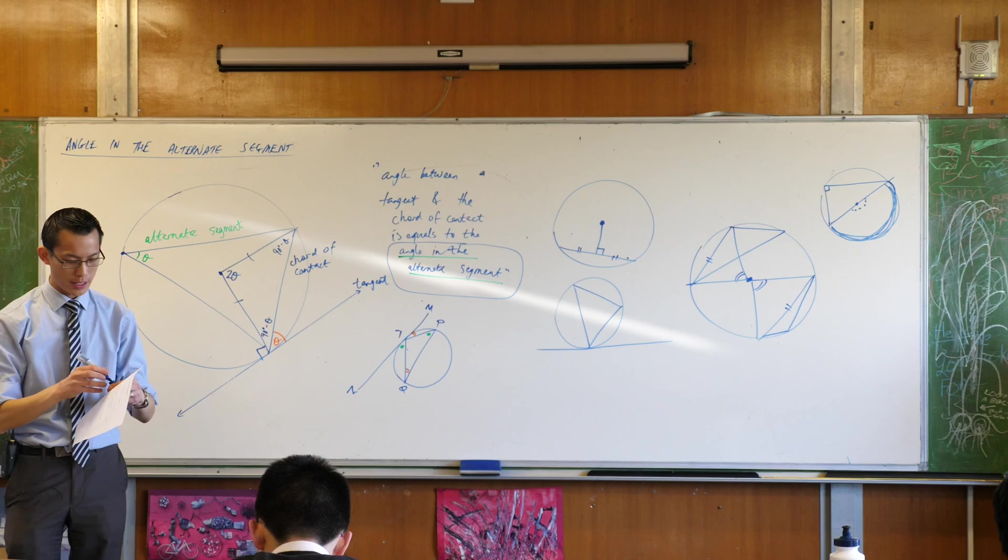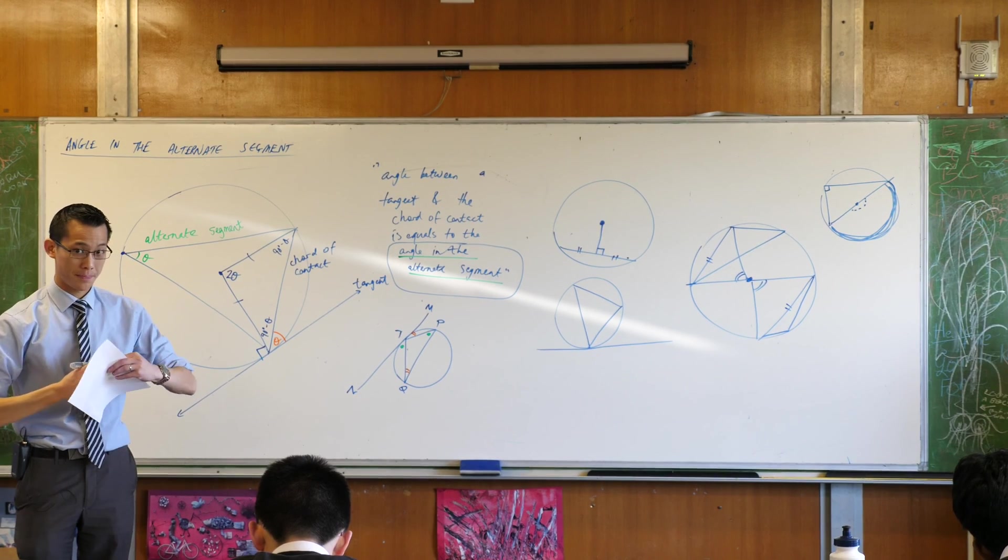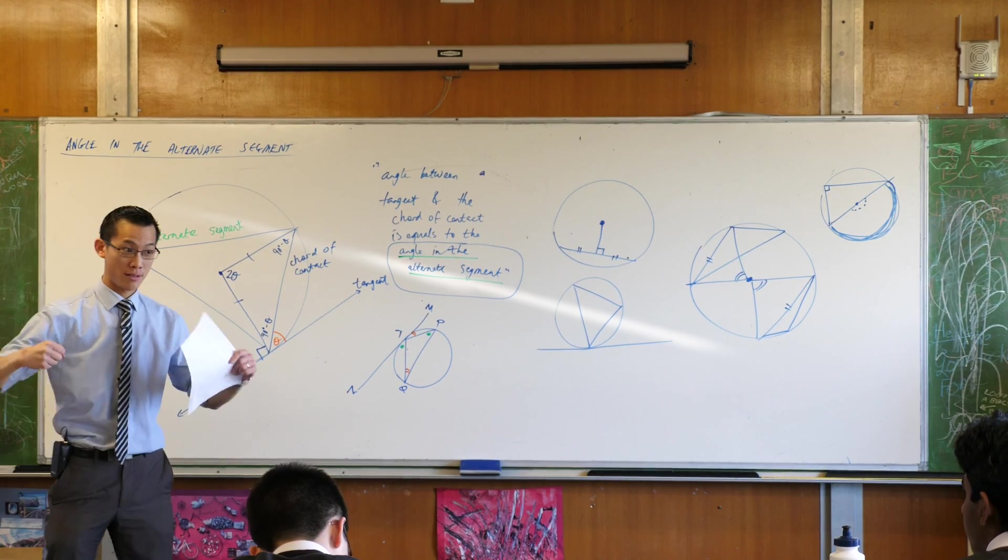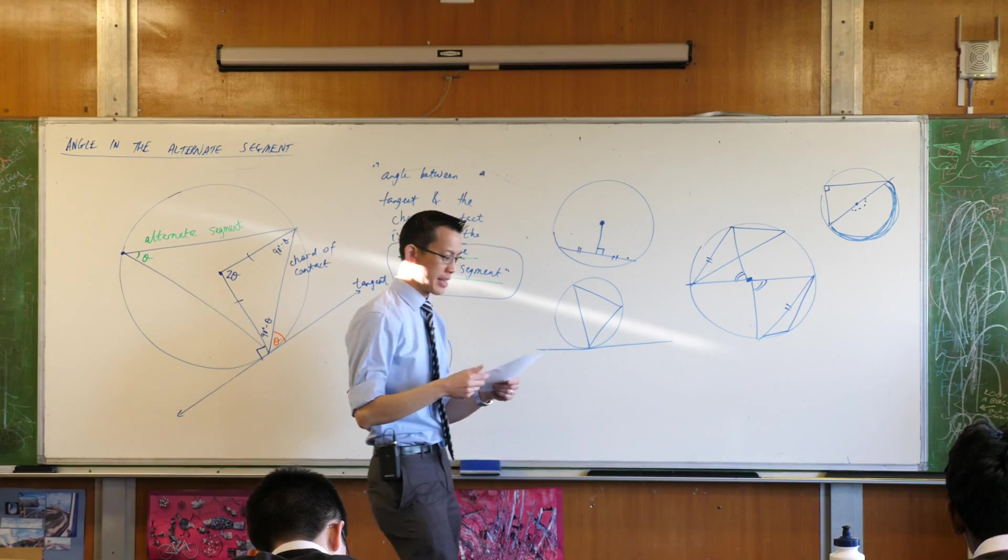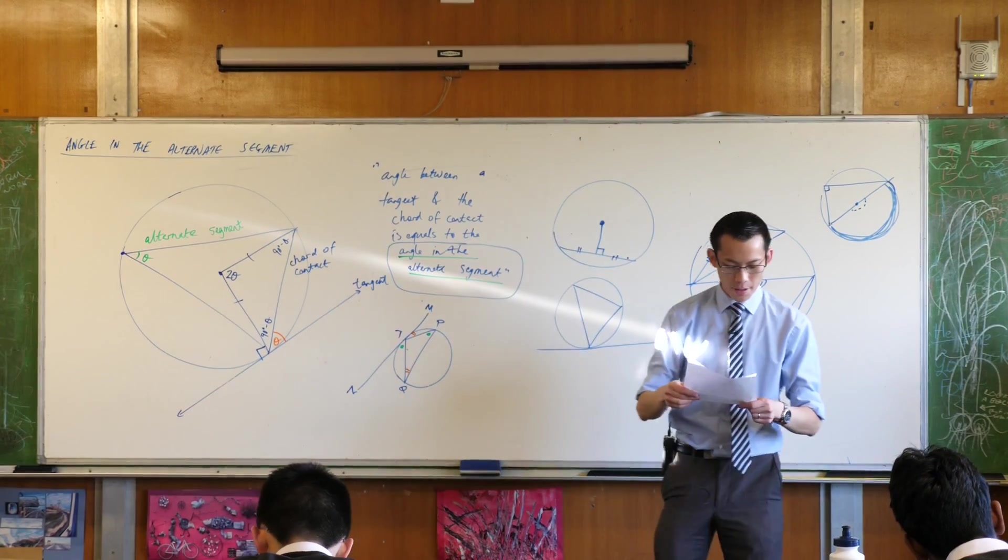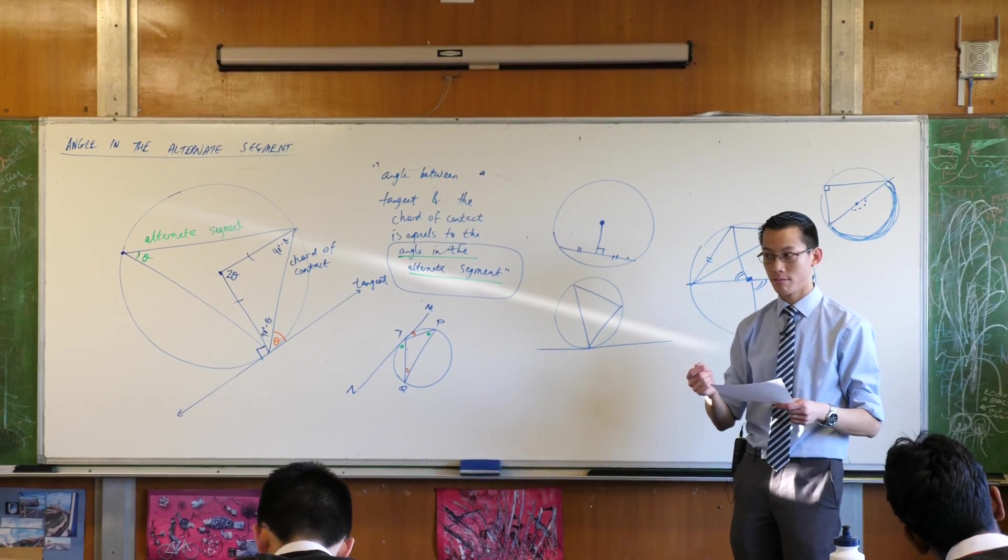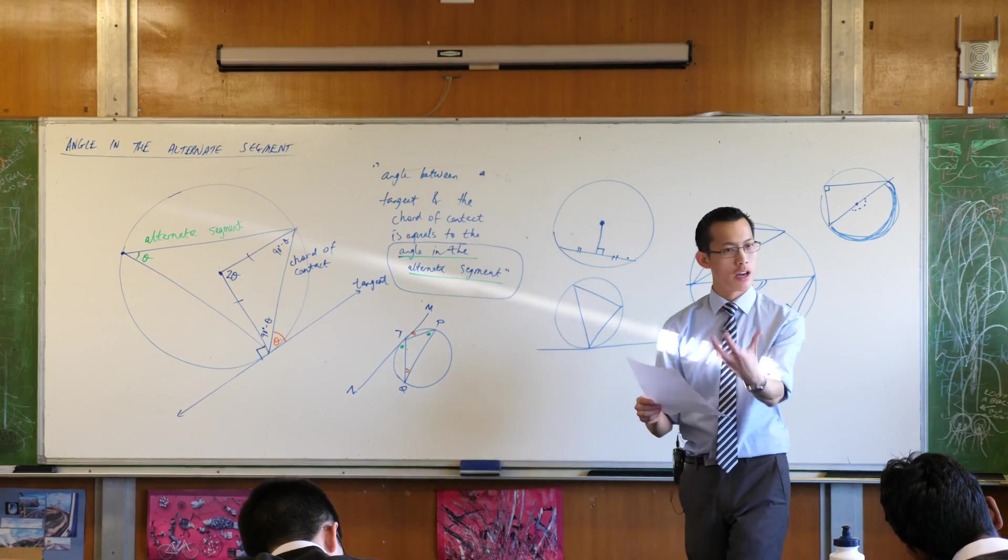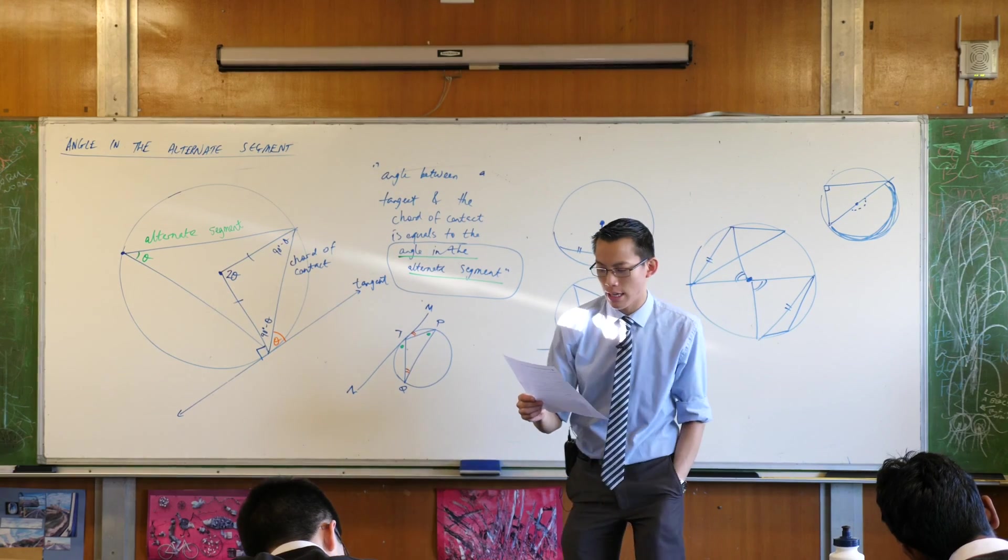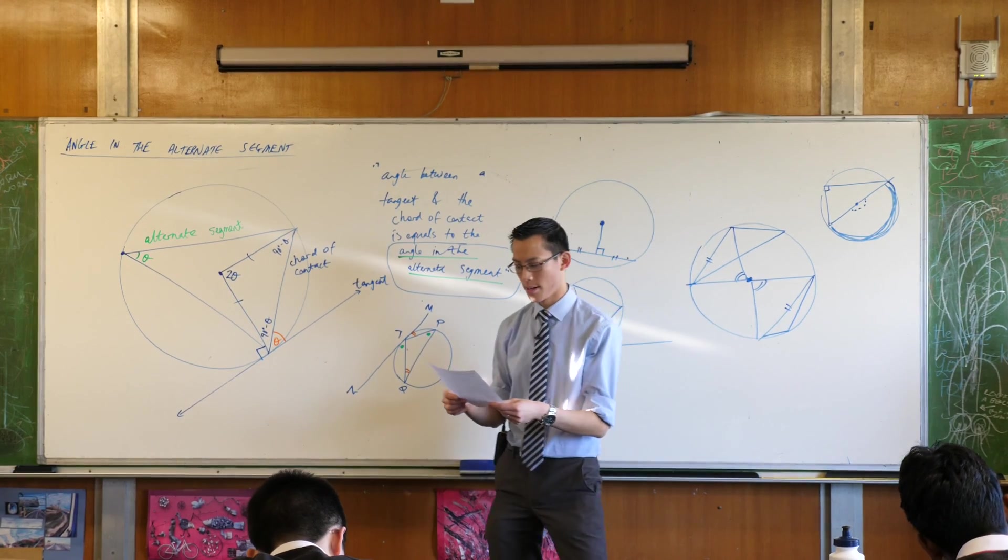Property six. Angles standing. Standing. Oh, sorry. The angle at the semicircle is the right angle. Number six. Angles standing on the same arc are equal. And an alternative wording for that but the same property is that angles in the same segment are equal.